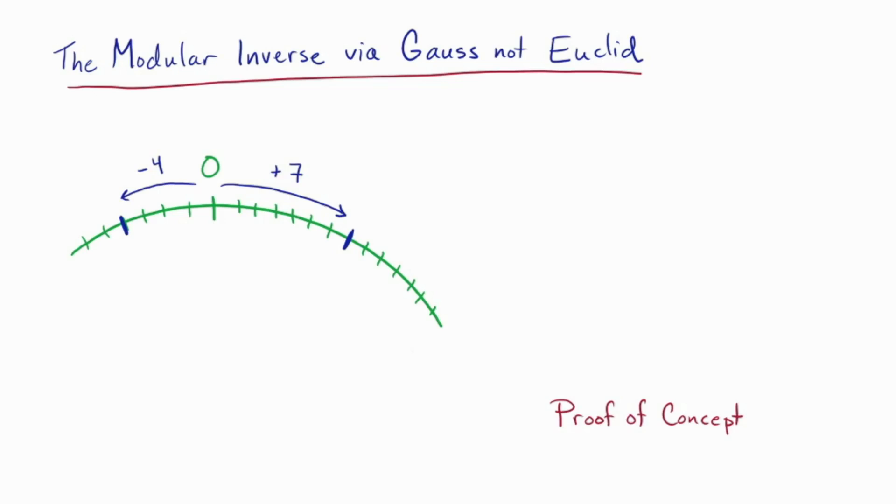The usual approach to computing a modular inverse involves the extended Euclidean algorithm. The Euclidean algorithm is sort of the mother of all algorithms in number theory, and rightly so, but the method I'll show you today is simpler and easier in some cases, particularly if you're working by hand.